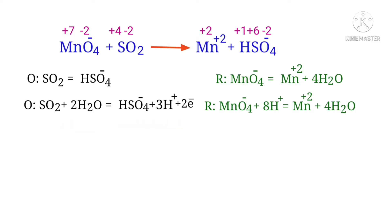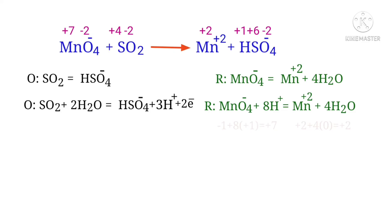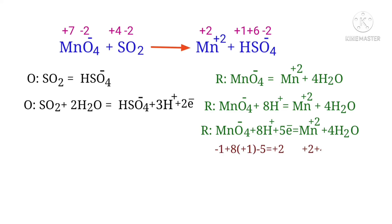Now you can equal the charges on the reduction half reaction. Both sides are not equal. To make them equal, you should add 5 electrons to the left side to make it equal to plus 2. Now the charges on the reduction half reaction are equaled.